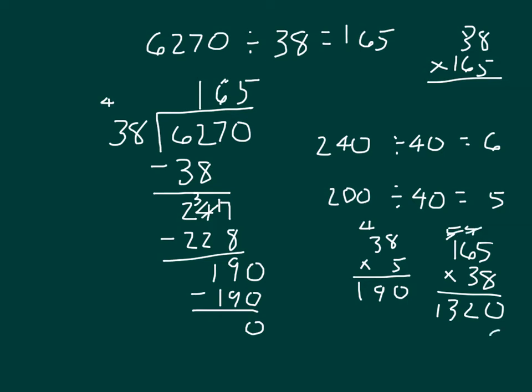Cross out my regroups, place a 0. 3 times 5 is 15, regroup the 1. 3 times 6 is 18, plus 1 is 19, regroup the 1. And 3 times 1 is 3, plus 1 is 4. Adding those carefully together, I have 6,270, which matches.